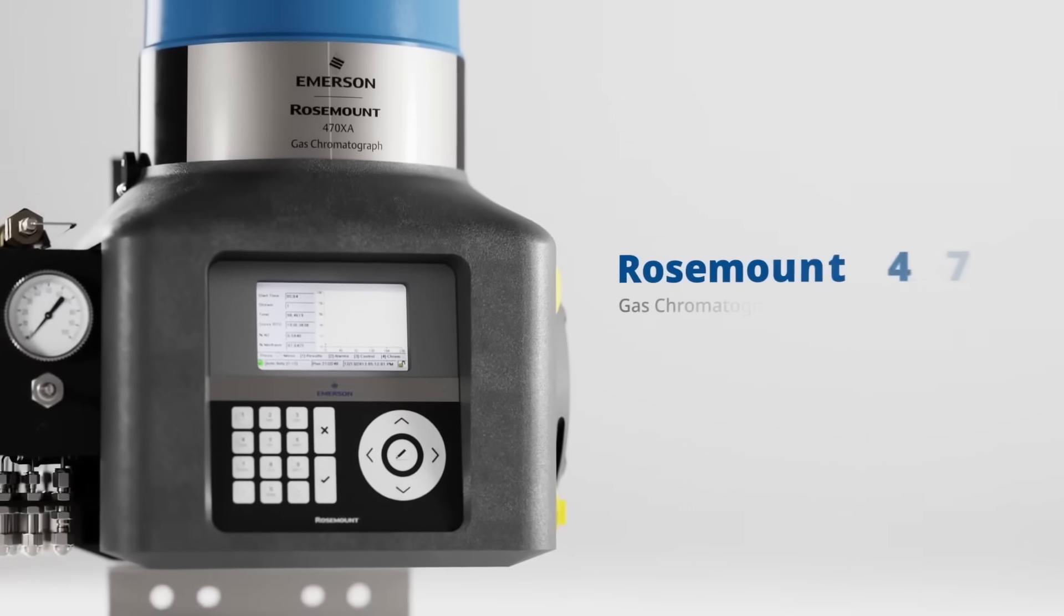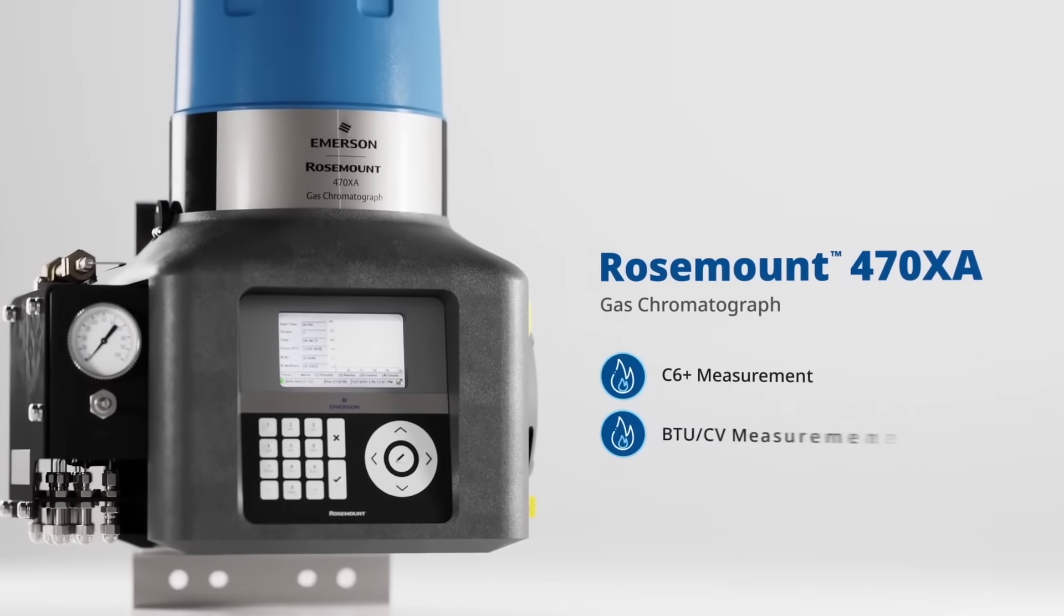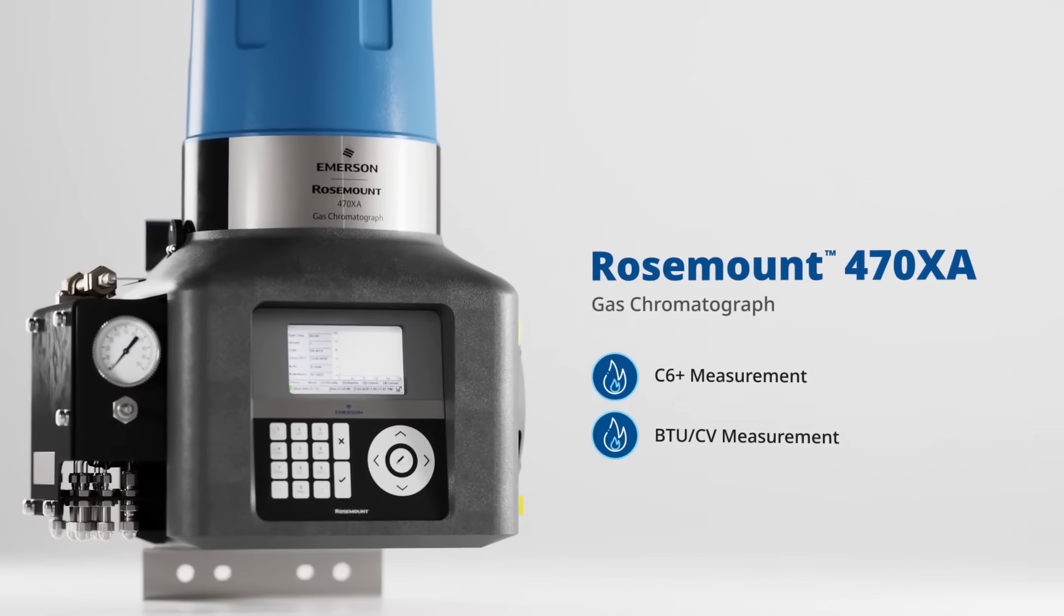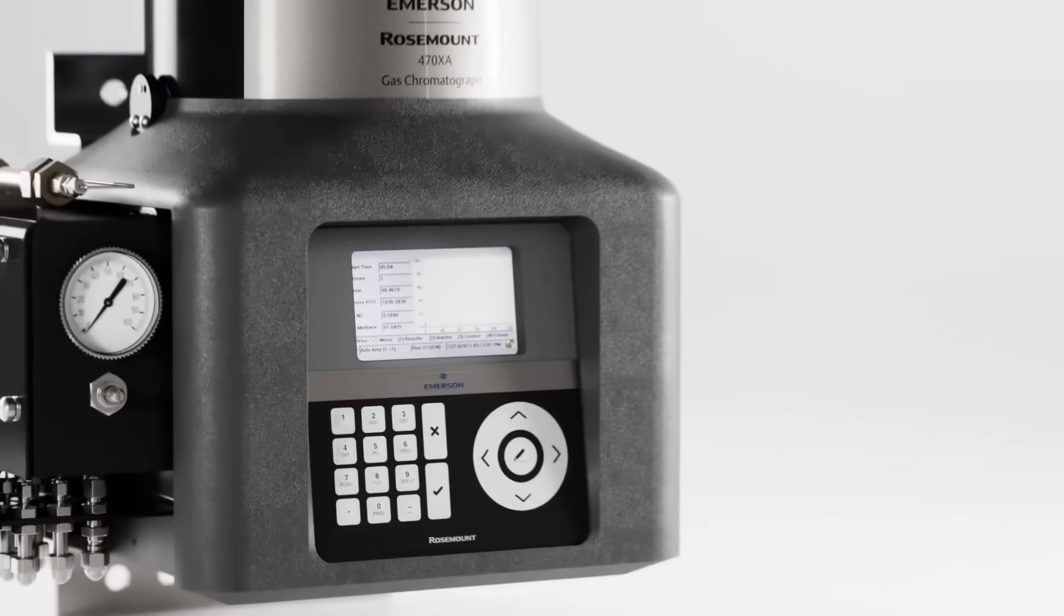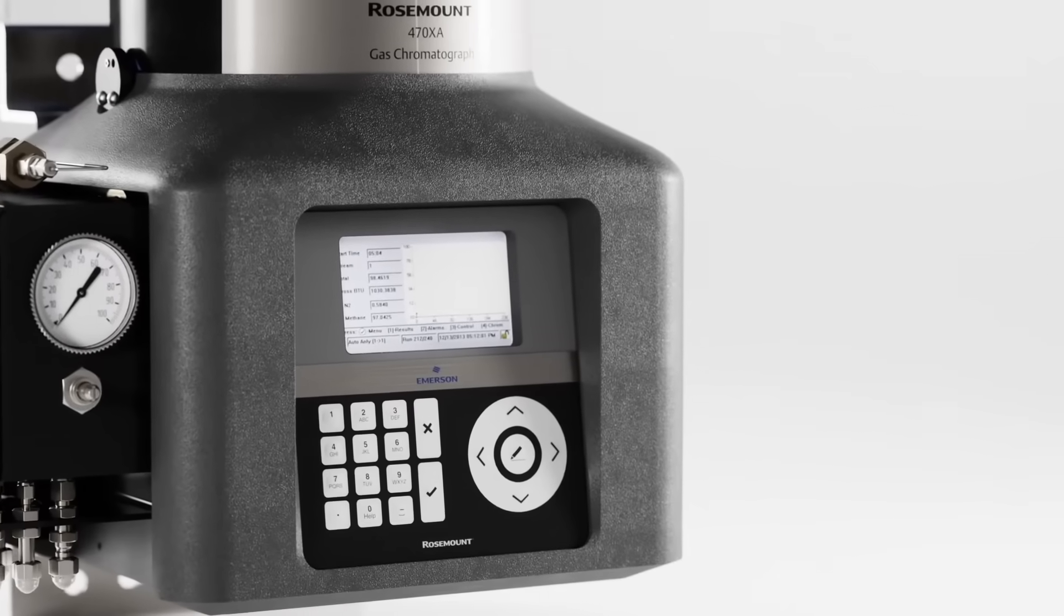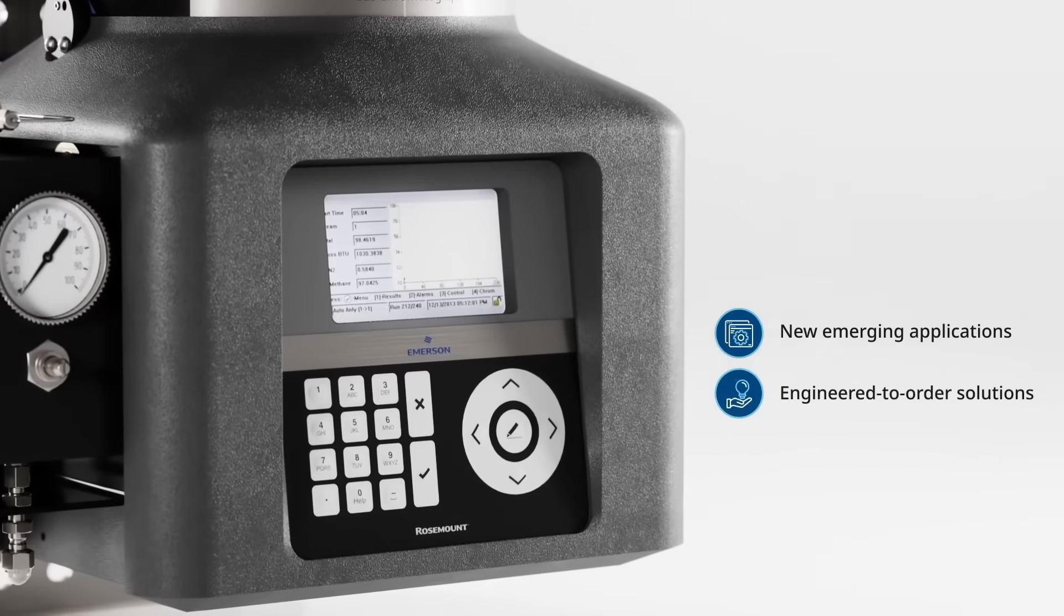Emerson's Rosemount 470 XA GC provides the standardized C6 Plus BTU-CV measurement, for which the Rosemount line of gas chromatographs have been historically known, while also providing the platform for expanding our base GC line to new emerging applications and engineered-to-order solutions.